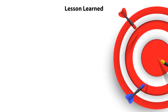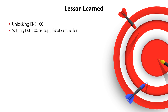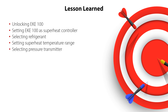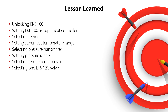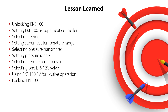You have now completed the display interface configuration video 4 for the EKE100 superheat controllers and valve drivers. You now know how to unlock the EKE100, set it as a superheat controller for a stepper motor valve, select the refrigerant, set the superheat temperature range, select the pressure transmitter, set the pressure range, select the temperature sensor, do the valve configuration by selecting a stepper motor valve, set the 2V version for one valve operation only, and lock the EKE100 again — all ensuring correct and safe system operation.